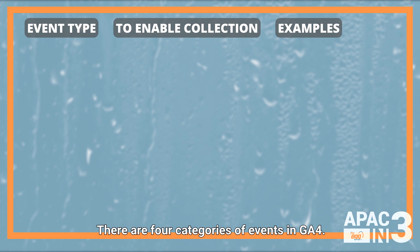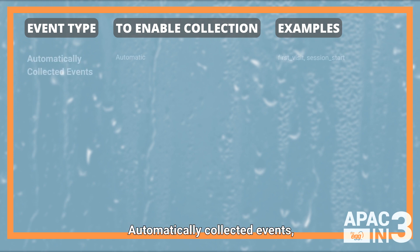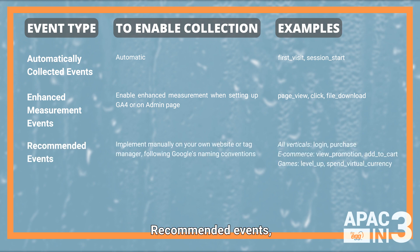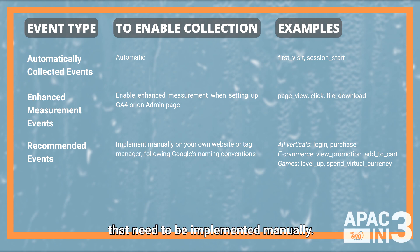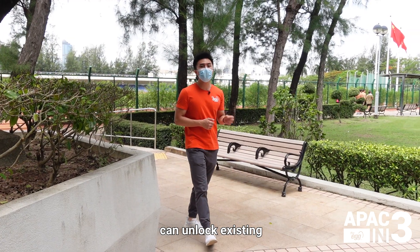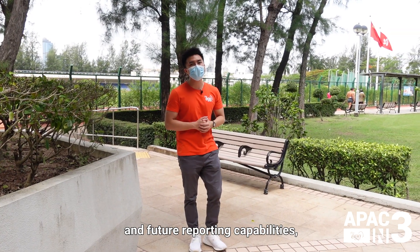There are four categories of events in GA4: automatically collected events, which are tracked once you install the tracking code; enhanced measurement events, which are automatically collected but can be enabled or disabled; recommended events, which are prescribed events categorized by business verticals that need to be implemented manually; and custom events, for anything else.